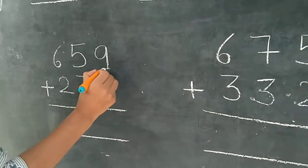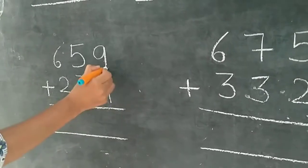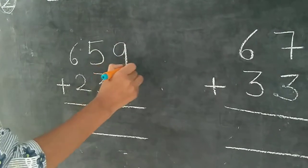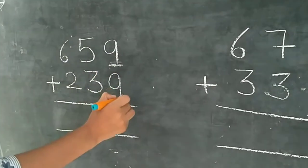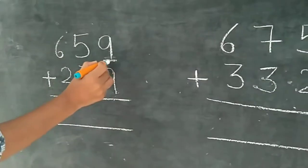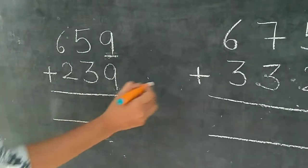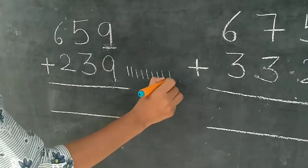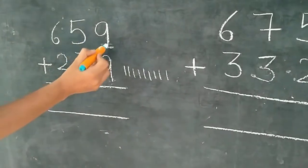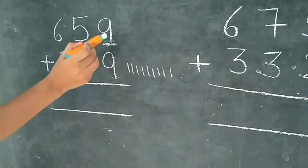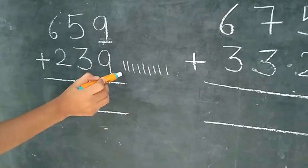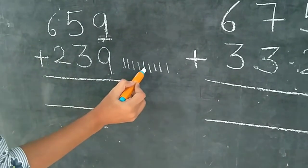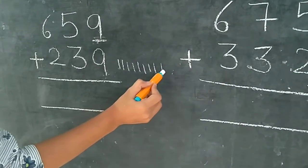Now next. 9 is already right here. We have to add 9 plus 9. Hamei 9 mein 9 aur add karne hain. 9 is already right here, so we have to draw 9 lines: 1, 2, 3, 4, 5, 6, 7, 8, 9. Now count after 9: 10, 11, 12, 13, 14, 15, 16, 17, 18.